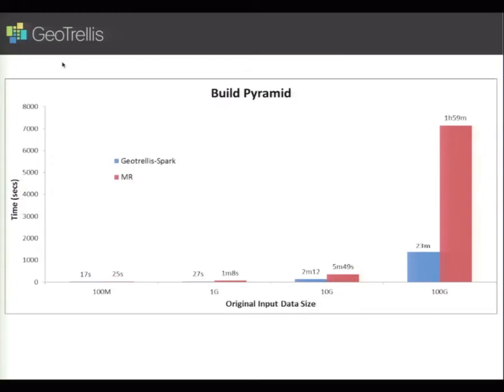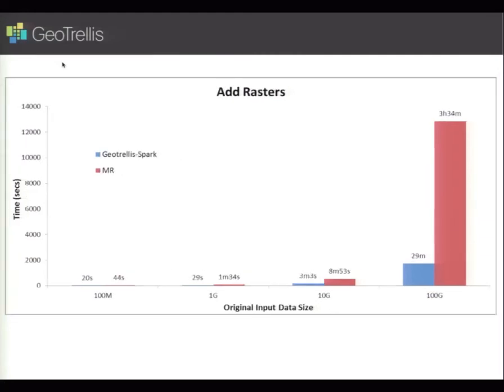Another benchmarked step is building a pyramid, where we take the highest resolution raster data and iteratively downsample it to create layers of different resolutions. This allows lower-resolution operations when working at worldwide scale without needing the highest resolution data. Again, we see six times the performance. Adding rasters — taking every cell from one raster and adding it to the other, essentially matrix addition — also shows a vast performance improvement.